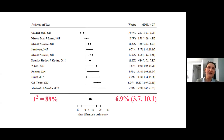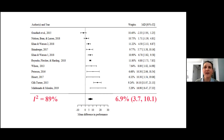The flipped sections had on average about a 7% higher final exam or grade compared to the lecture sections. The 95% confidence interval around the pooled estimate was 3.7 to 10.1, which is significant and fairly precise due to the large pooled sample size. However, the estimated heterogeneity was substantial with an I² of 89%, suggesting large variation in the magnitude of effects beyond what would be expected from sampling error alone.